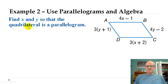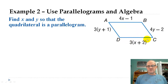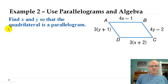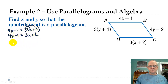Example 2 is pretty much exactly like what we did in section 6.2 — just coming at it from the opposite way. Instead of knowing it's a parallelogram and finding x and y, the question asks: find what x and y have to be in order to make this a parallelogram. Side AB has to be congruent to side DC, and side AD has to be congruent to side BC. For x: 4x minus 1 equals 3 times x plus 2. Distribute the 3: 4x minus 1 equals 3x plus 6. Subtract 3x and add 1, so x equals 7.